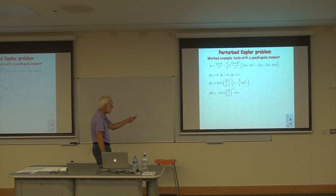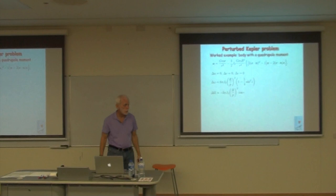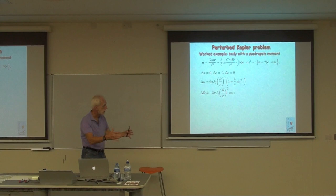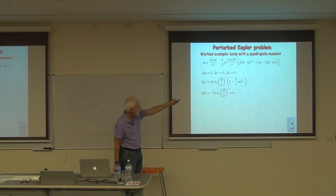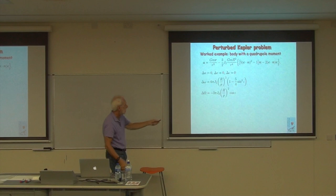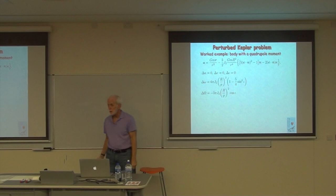In the black hole case, there are additional relativistic terms, but let's focus on the Newtonian quadrupole term. It's proportional to R squared, the radius of this body that has a quadrupole moment, and it falls off as 1/R^4 compared to the 1/R^2 of the Newtonian term. It also depends on direction. E is the symmetry axis of our body with the quadrupole moment, and N is the radial unit vector, so there's a linear dependence in this perturbation. It both breaks the 1/R^2 law and breaks spherical symmetry.